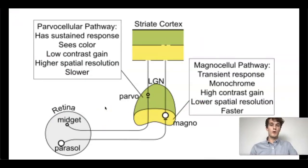So the next logical question that you might have is, what's the difference between the parvo and magnocellular pathways? Well, the parvocellular pathway is involved in seeing color. This is going to be high resolution information and specifically high resolution color information.